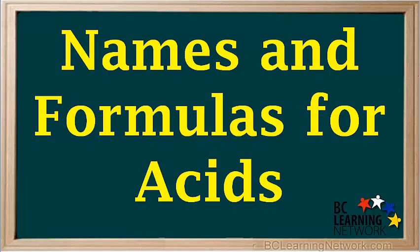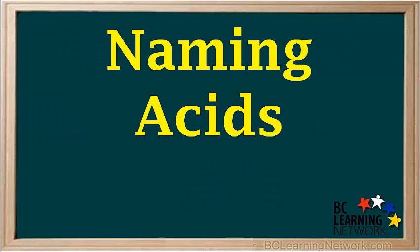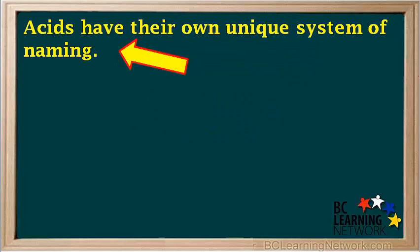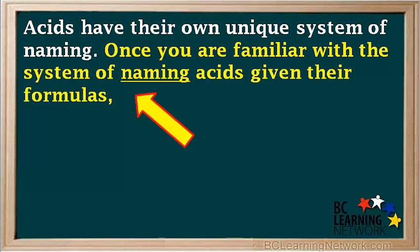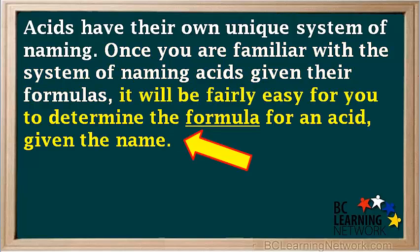This video will go over the process of naming an acid given the formula and writing the formula for an acid given the name. We'll start with the process of naming an acid given its formula. Acids have their own unique system of naming which is different than that of other compounds. Once you're familiar with the system of naming acids given their formulas, it will be fairly easy to determine the formula for an acid given the name.